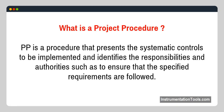What is a project procedure? PP is a procedure that presents the systematic controls to be implemented and identifies the responsibilities and authorities, such as to ensure that the specified requirements are followed.